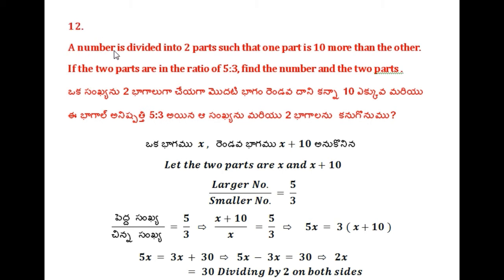Twelfth problem. A number is divided into two parts such that one part is ten more than the other. And if the two parts are in the ratio of 5 is to 3, then find the two parts. The ratio between these two numbers is given as 5 is to 3.